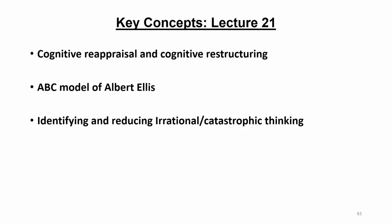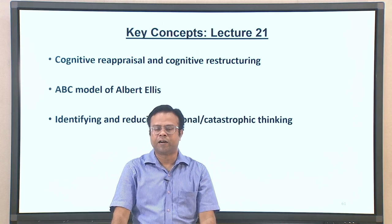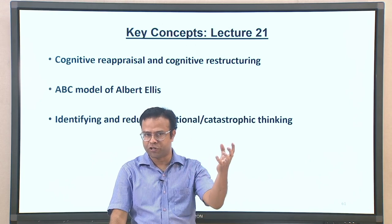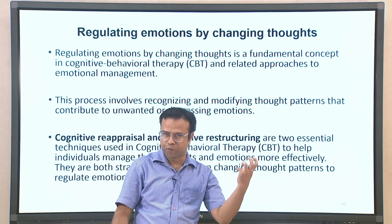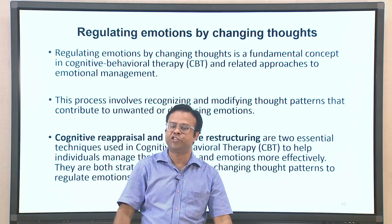In today's lecture, we will cover more specifically how we can adaptively regulate emotions — particularly when negative emotions are generated in a maladaptive way. One key strategy is intervening at the thought level: changing thought processes. We will try to understand this using the ABC model of Albert Ellis, and how it can be applied to regulate emotions, particularly to reduce negative emotions.